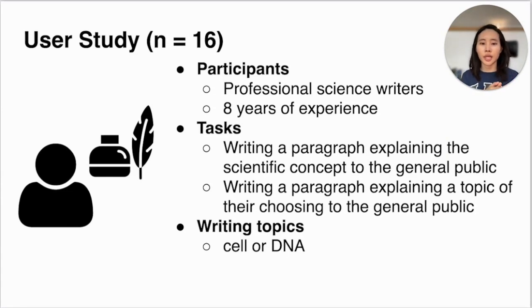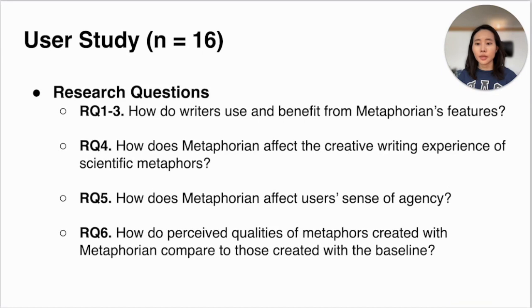They were given two writing tasks, writing a short paragraph explaining the given scientific concept to the general public, and writing a short paragraph explaining a topic of their choosing to the general public. The given topic was either cell or DNA with associated subconcepts, and the study then concluded with a survey and follow-up interviews. It was designed as a controlled study with a within-subject design, where each participant compared the system to a baseline interface with the Google search UI.